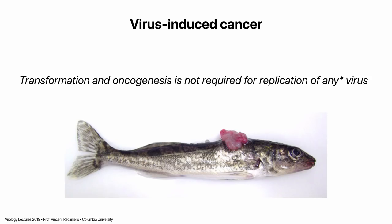I want you to understand that transformation and oncogenesis are not required for the replication of any virus. No virus has to make a tumor in order to replicate. It's an accident, as you will see. There is one exception — a fish retrovirus — but for the most part, all these human viruses don't have to cause cancers in order to replicate and find a new host.